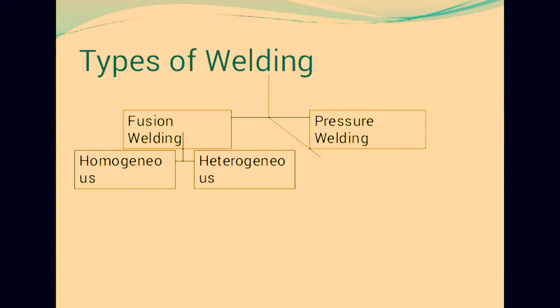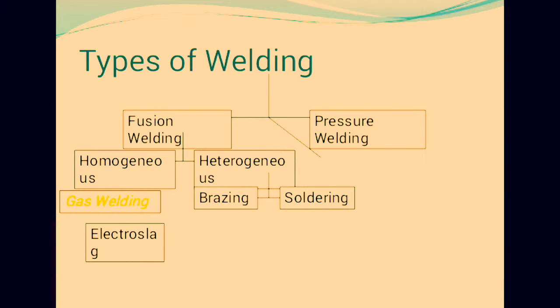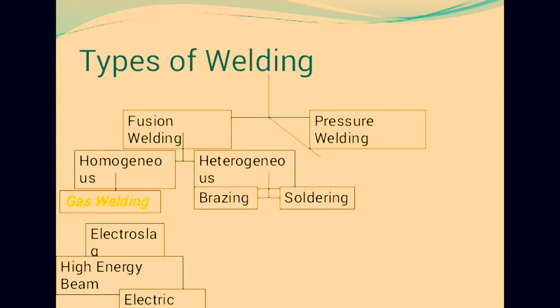In fusion welding, there are two types: homogeneous and heterogeneous. Heterogeneous welding is further divided into two types: brazing and soldering. There is one more type — gas welding. These are the homogeneous welding types: gas welding, electric welding, and high energy welding.